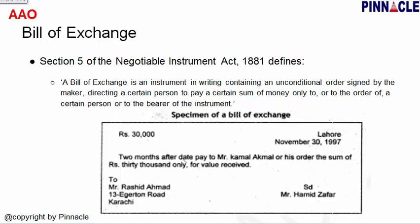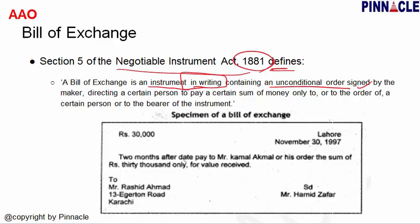Bill of Exchange. In this video we will see what is a bill of exchange, how a business uses a bill of exchange, how to use it in trade, and how to record it in accounting books. Section 5 of the Negotiable Instruments Act 1881 defines bill of exchange as an instrument in writing containing an unconditional order signed by the maker directing a certain person to pay a certain sum of money only to or an order of a certain person or the bearer of the instrument.